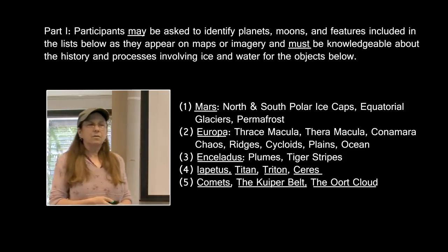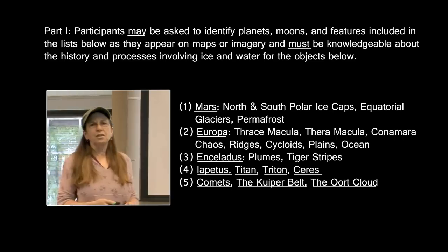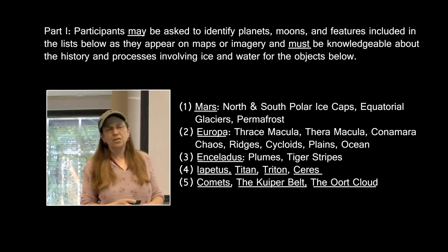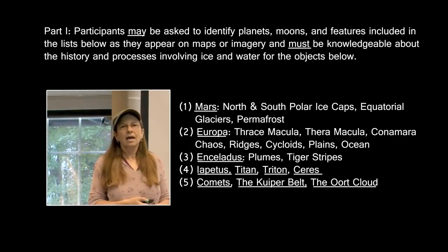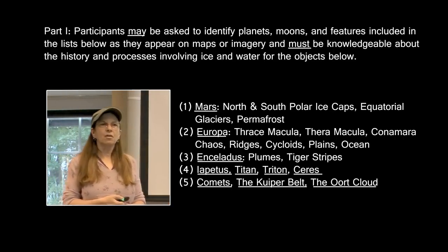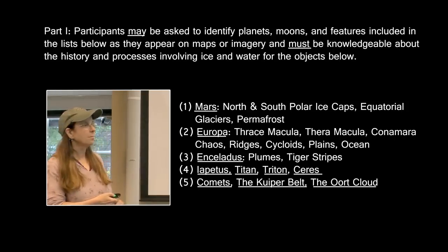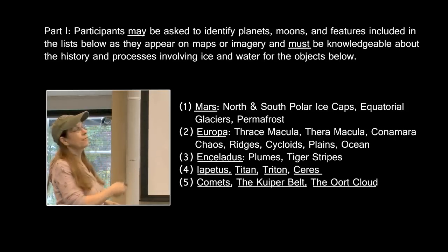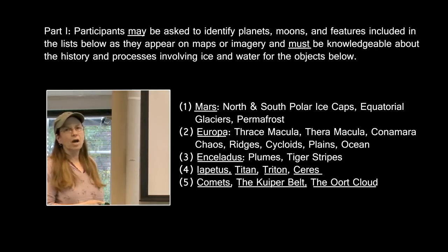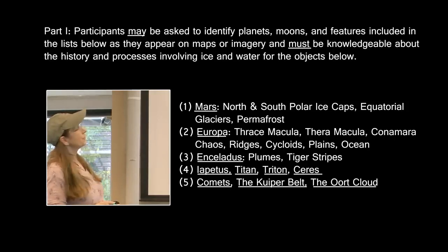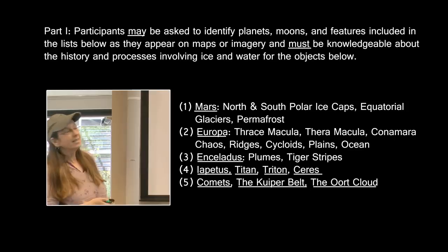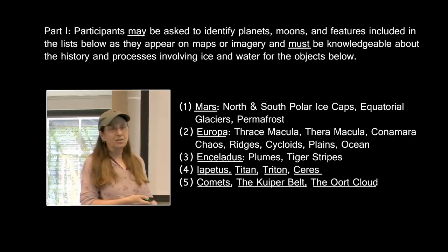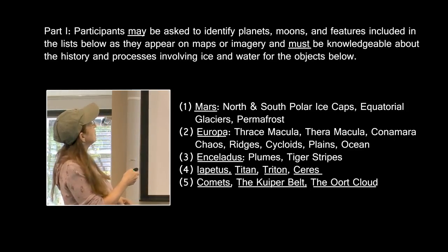The first part is identification — identification of the features and landforms associated with these five groups of objects: Mars, Europa, Enceladus, Iapetus, Titan, Triton, Ceres, and Comets.